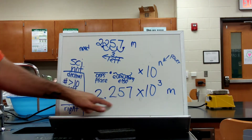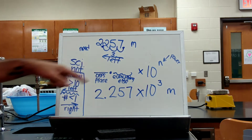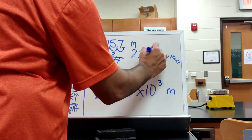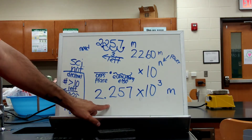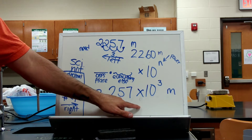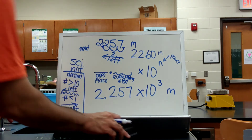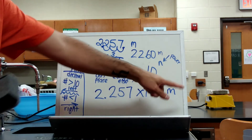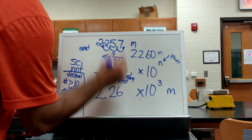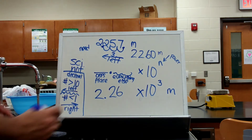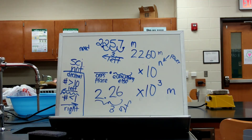Now, how can I change this into a number that has 3 significant figures? I couldn't round up easily in the original form — if I did, I would have 2,260. But with scientific notation, I could round the 0.257 in 2.257 — I could round that 5 up to 6. So instead of 2.257 times ten to the third meter, if I wanted 3 significant figures, I could erase the 5 and 7 and write 2.26 times ten to the third. And there is my desired 3 sig figs.